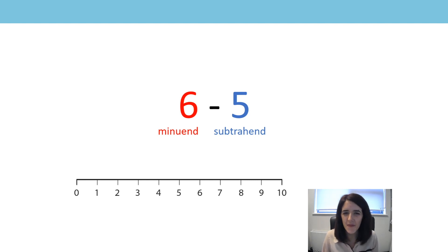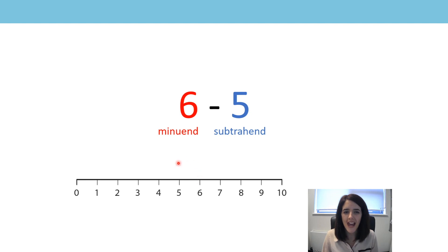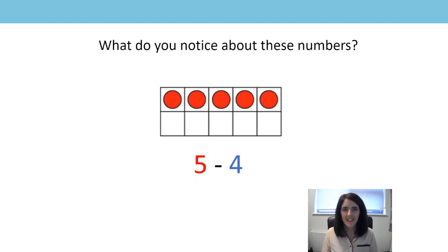Did you know that six and five are consecutive numbers? Consecutive numbers are numbers that are next to each other when we count, and they're next to each other on a number line. Five is one less than six, so these consecutive numbers have a difference of one. I wonder if that's always true. Let's have a go at another problem to see whether consecutive numbers always have a difference of one.